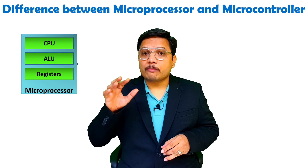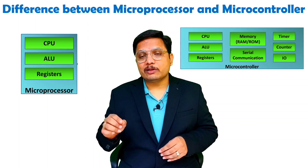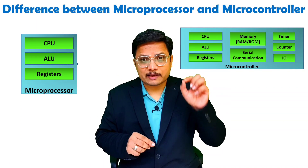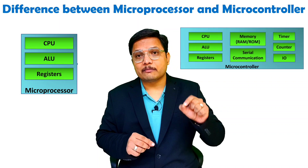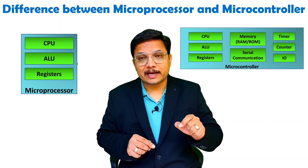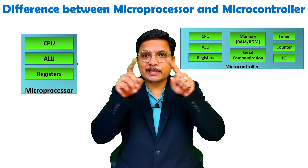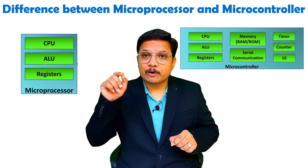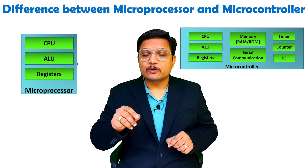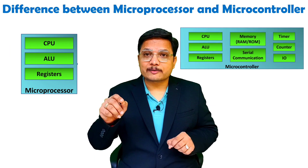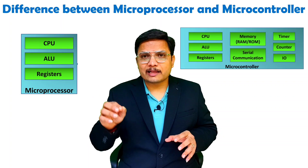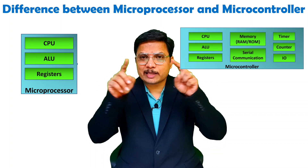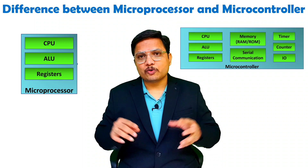While when we talk about microcontroller, you will observe that in a single chip you also have CPU, ALU, and registers — but along with that, there are many other things on that single chip, like RAM, ROM, timers, IO ports, and serial communication ports.